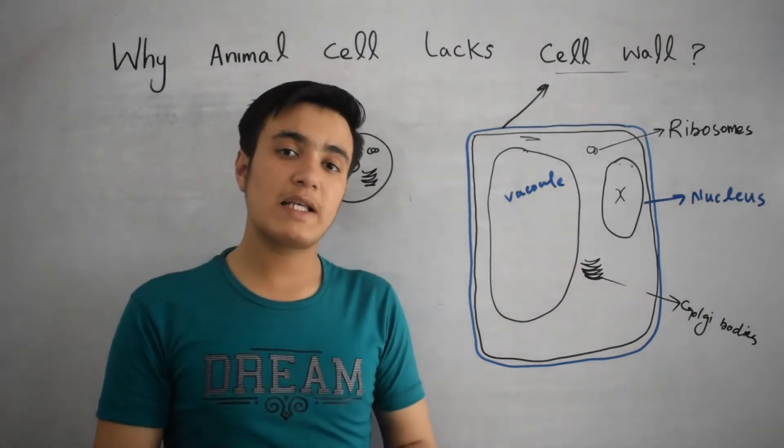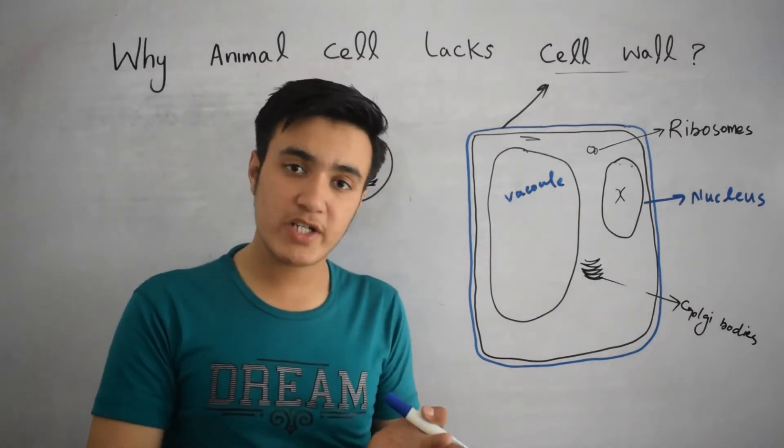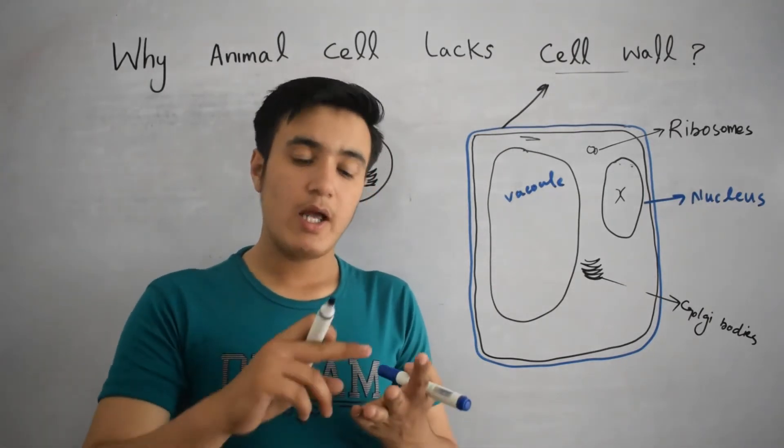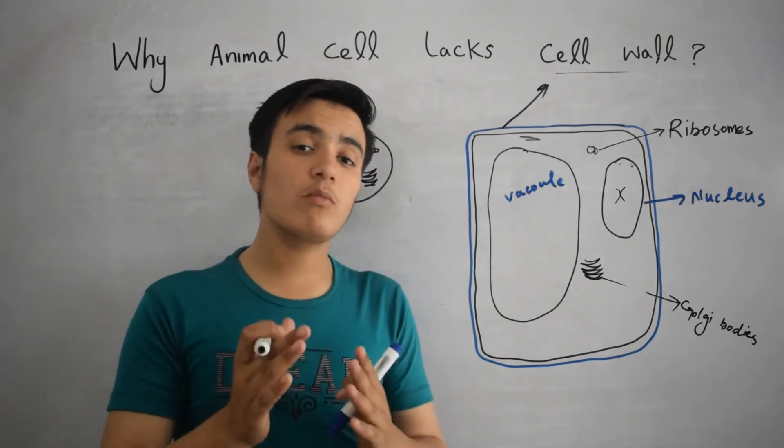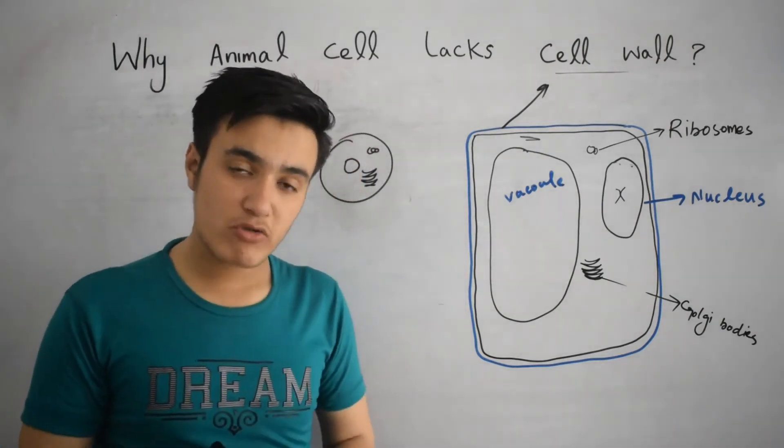We know that the cell wall is basically made of carbohydrate, protein, nitrogen, etc. And they all bound together are very tough and it is really strong.